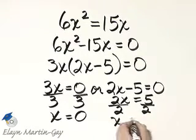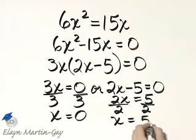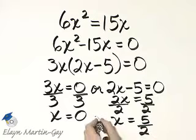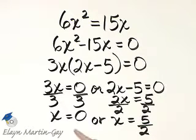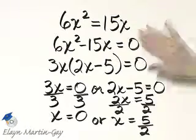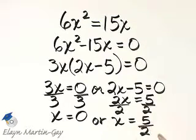And I'll have x is equal to 5 halves. So x is equal to 0 or x is equal to 5 halves. We have two solutions to this equation. 0 and 5 halves.